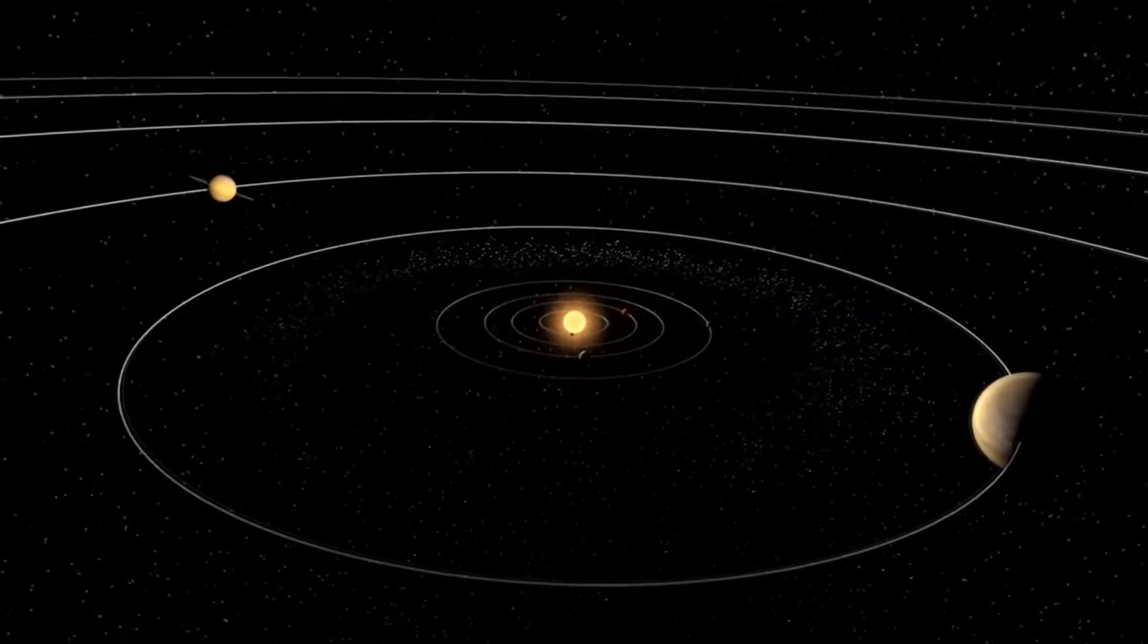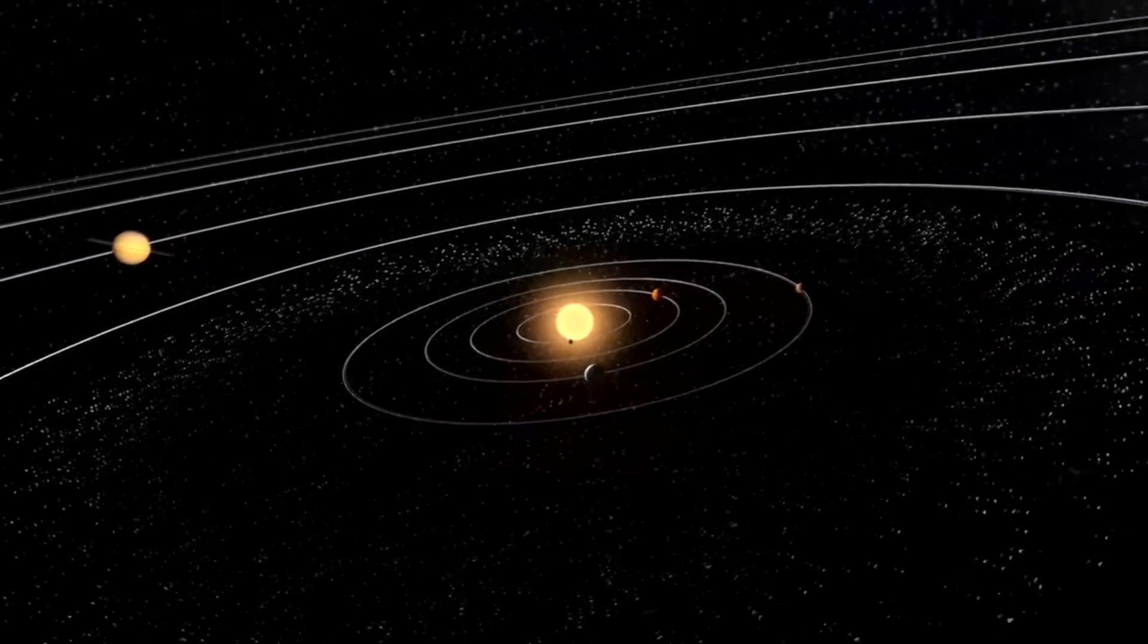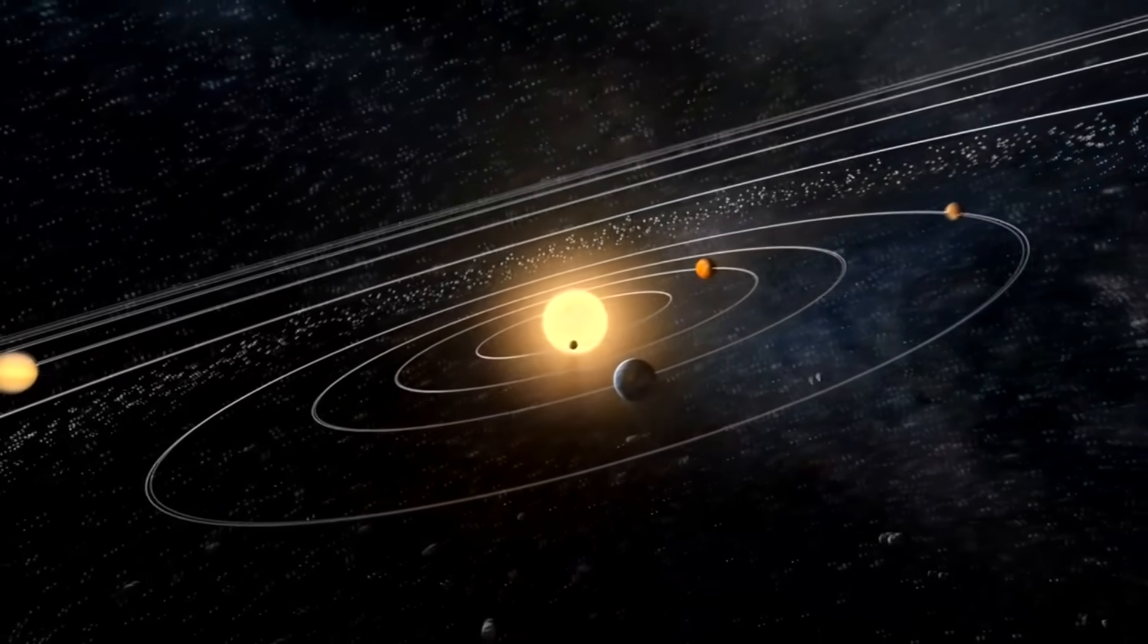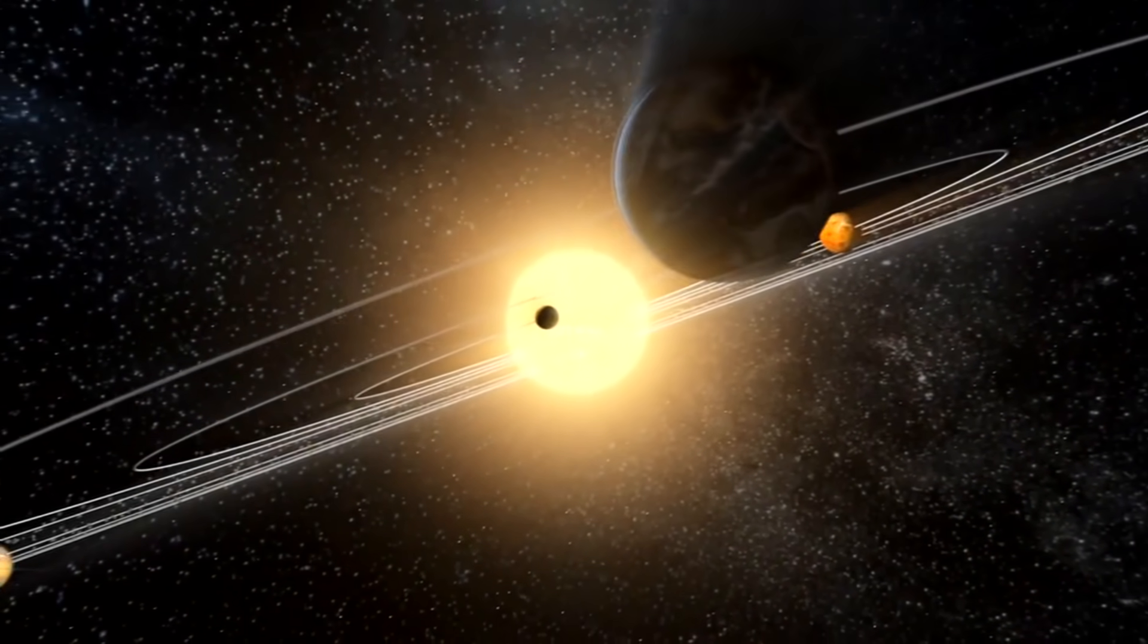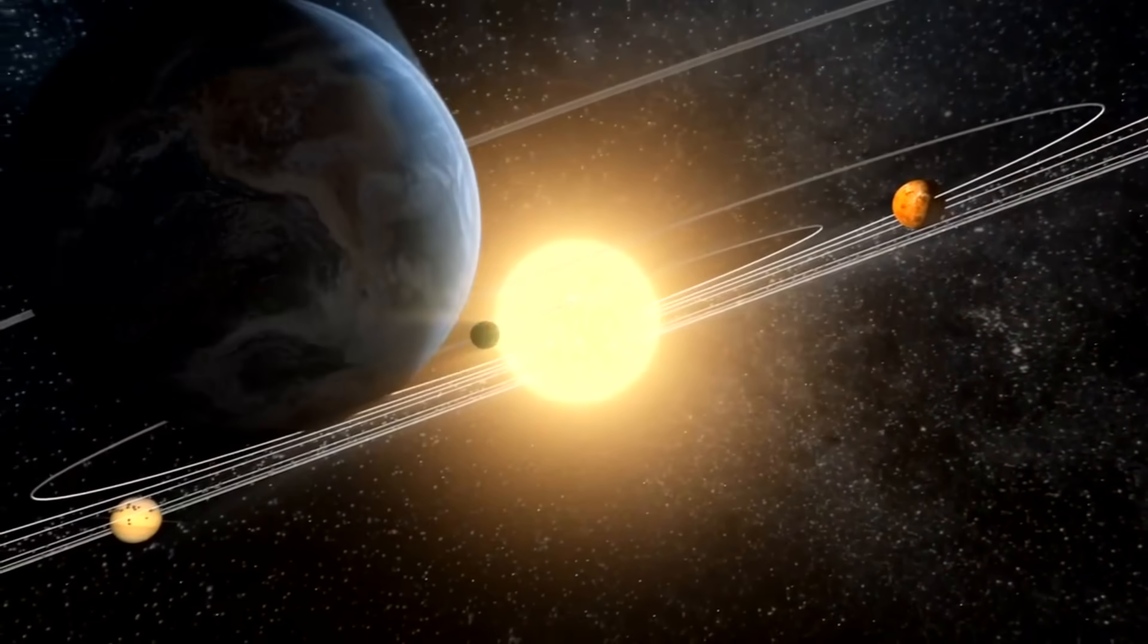Our solar system came about in a dynamic way. Our early solar system likely had a lot more planets than 8, and today there's one particular planet that used to be in our solar system I wanted to discuss with you.